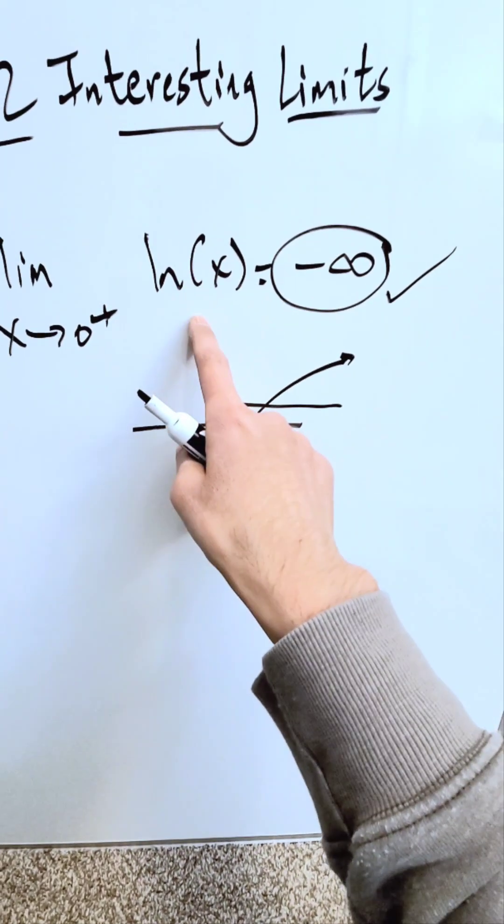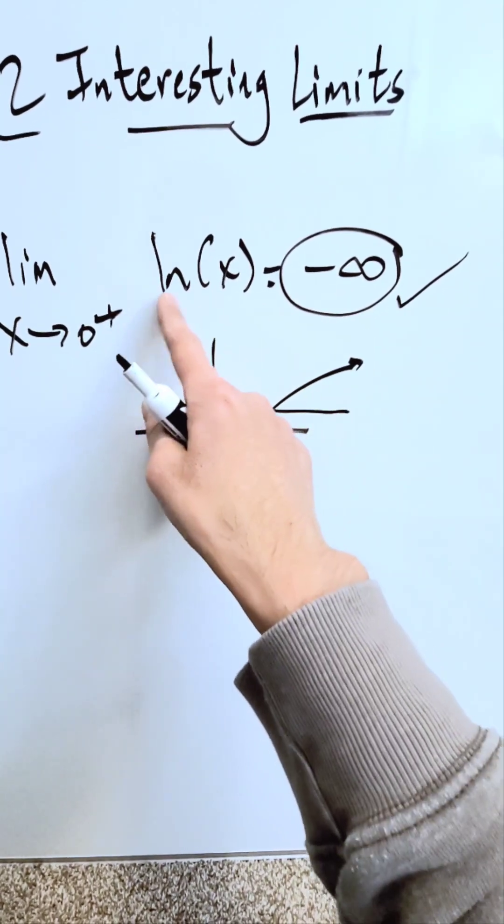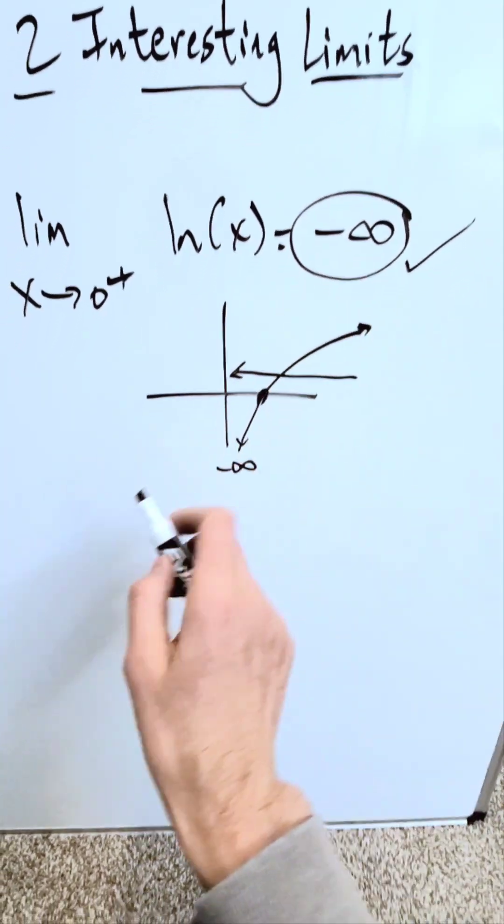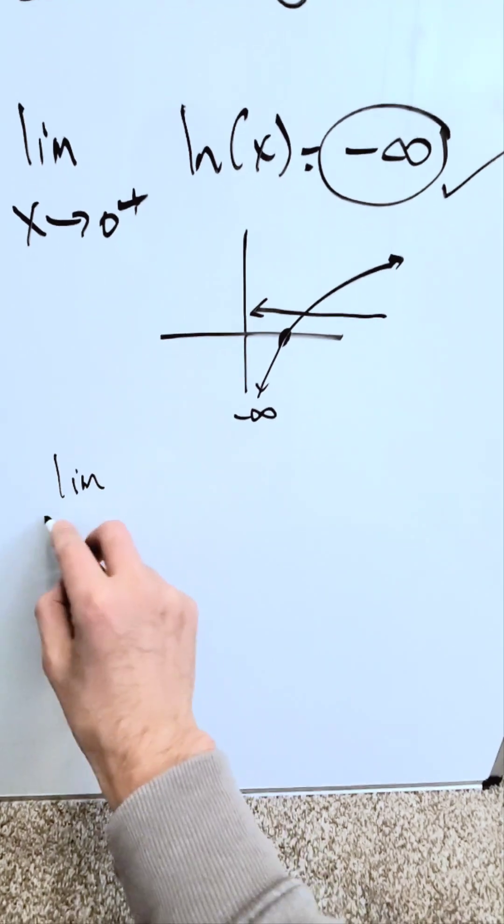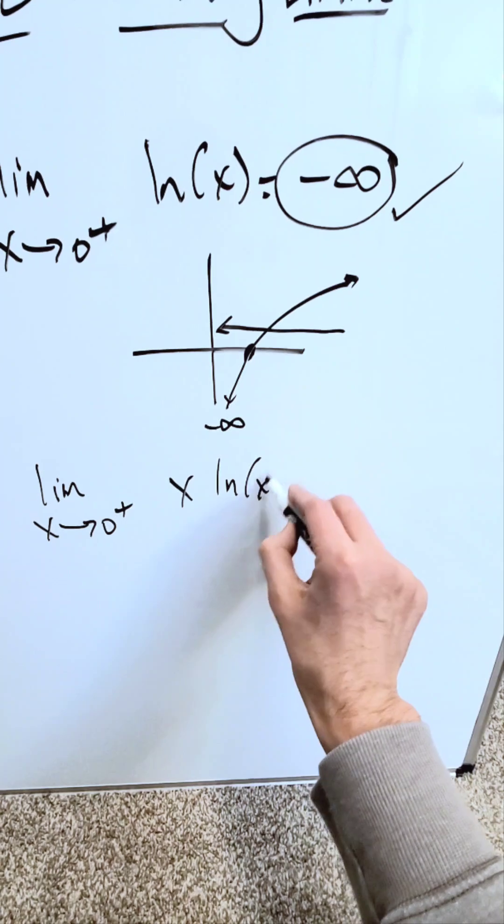Now the other limit we're looking at is very similar to this, but the product of another function to this limit drastically changes your end result. What is this limit? Limit as x approaches 0 from the right, again right-hand-sided limit, I have x natural log x.